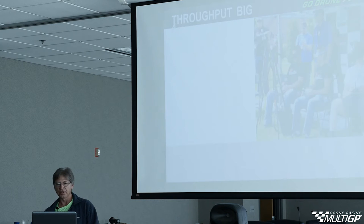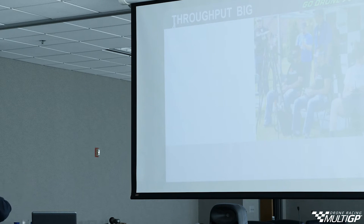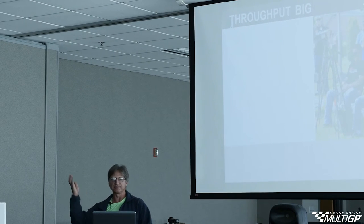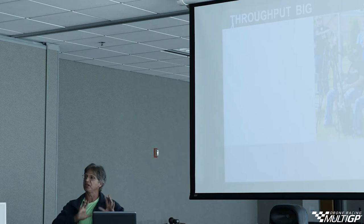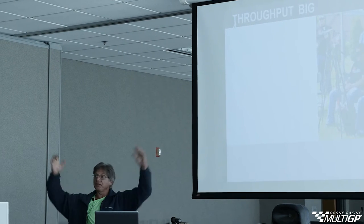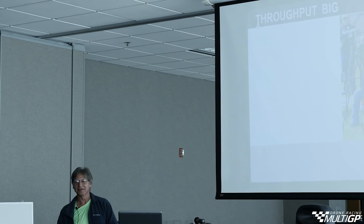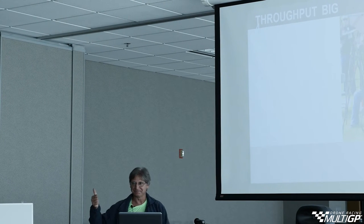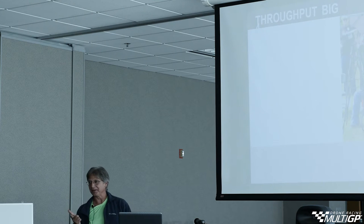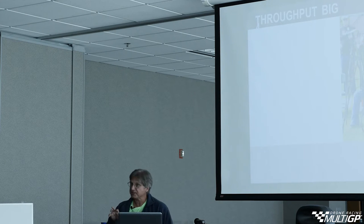Quiz time on throughput. I can take anybody who's never been to an FPV race and if they do these things they will have a throughput of six races per hour — yet big races can't seem to pull off even four or five per hour. The four big throughput increasers: number one, small course. Number two, minimize VTX frequency changes — stay on your assigned channel. Number three is dedicated chairs. Number four is keeping pads close to pilot stations.